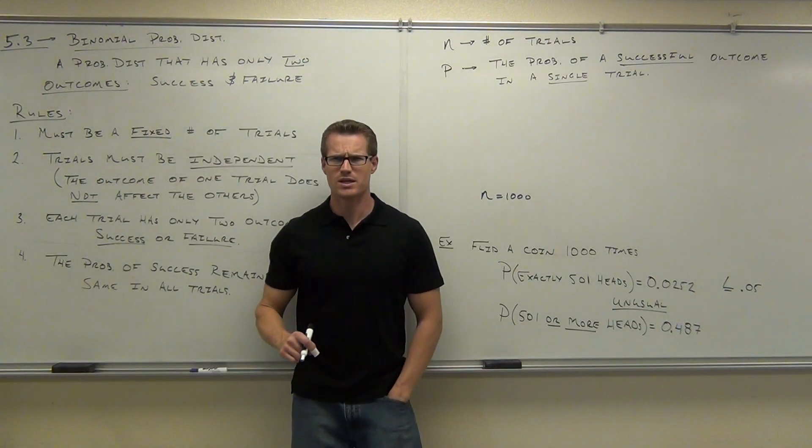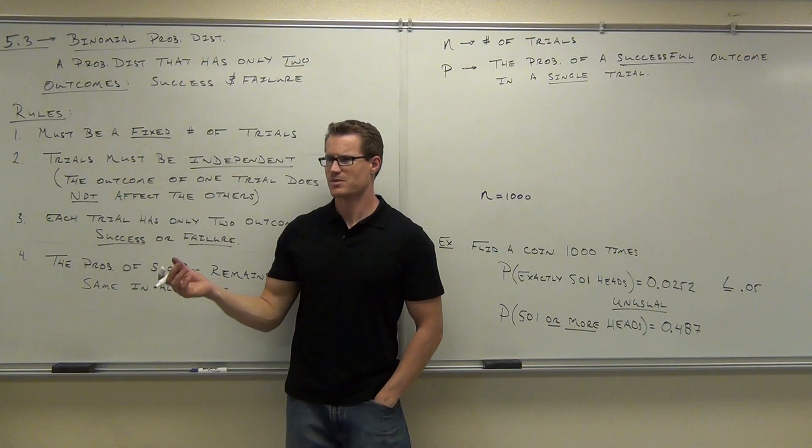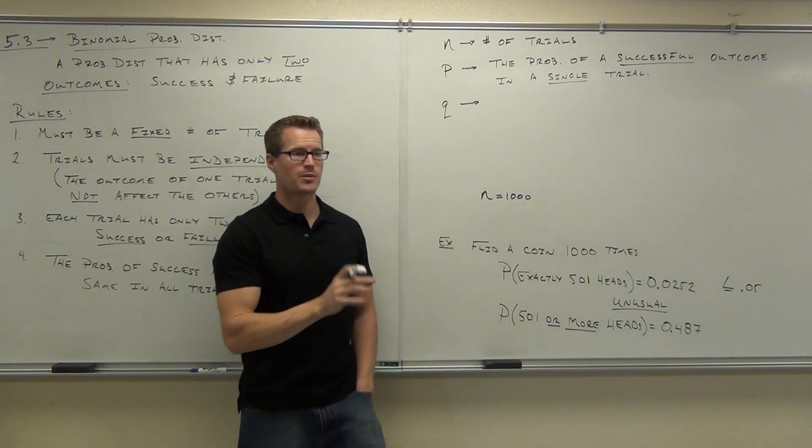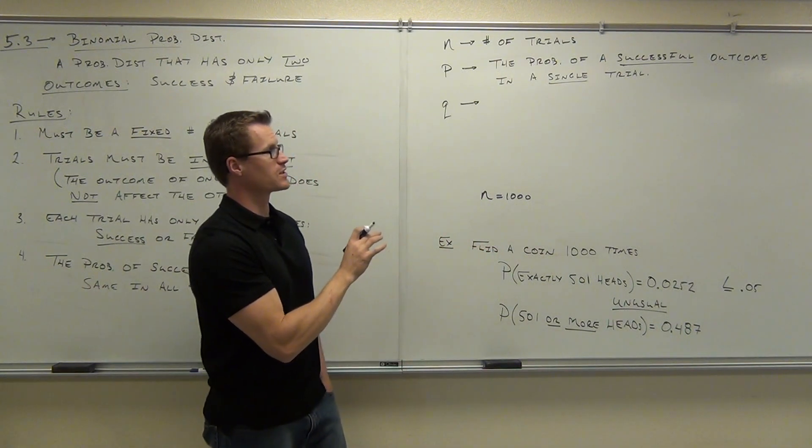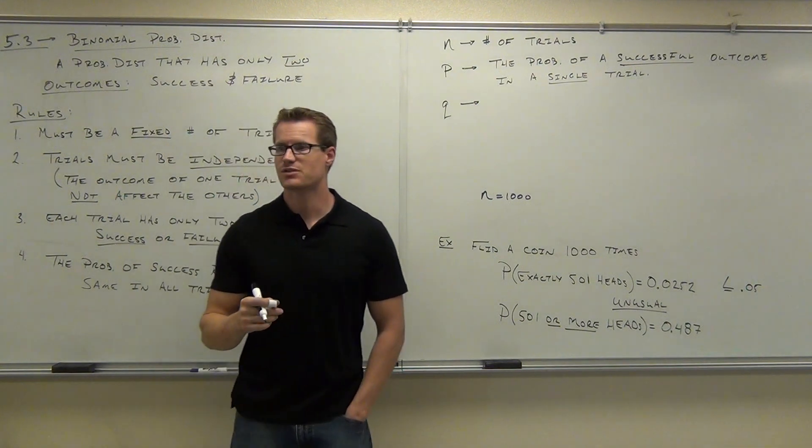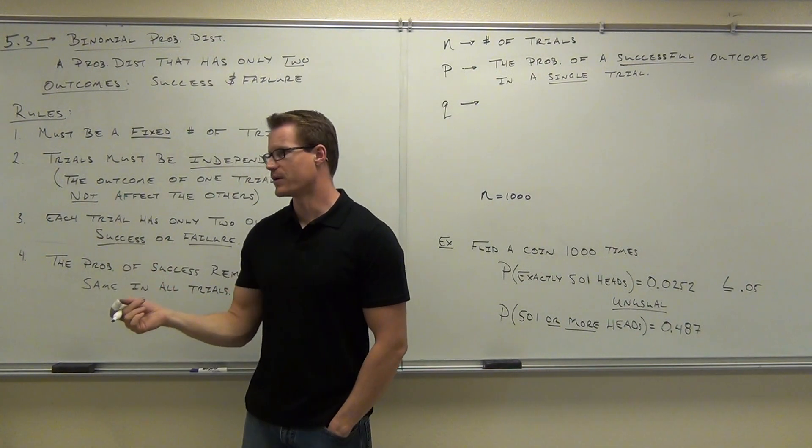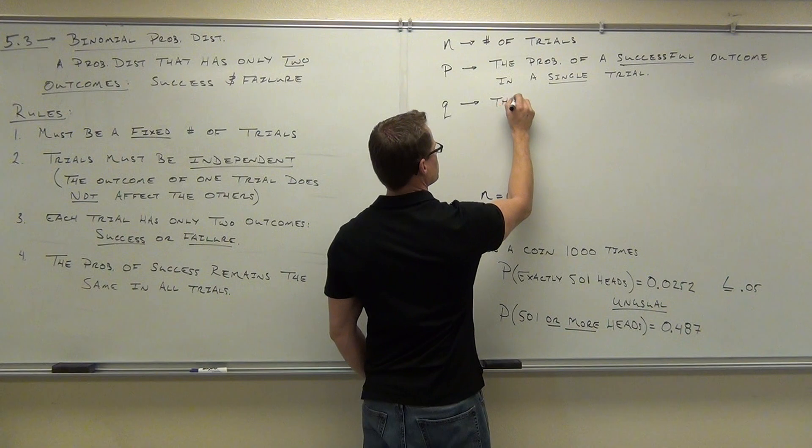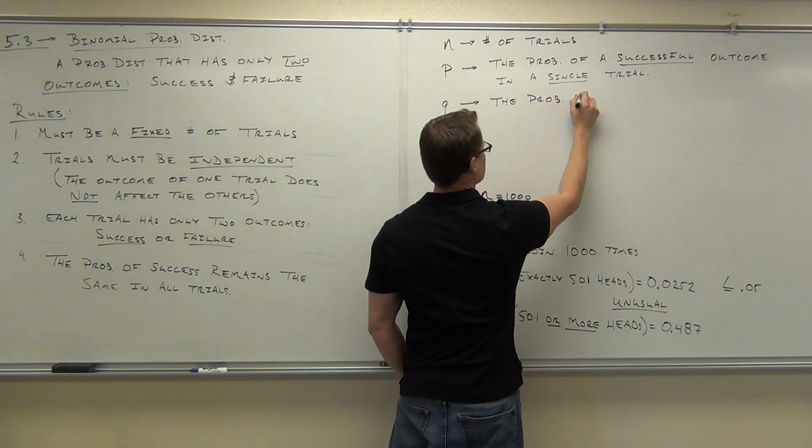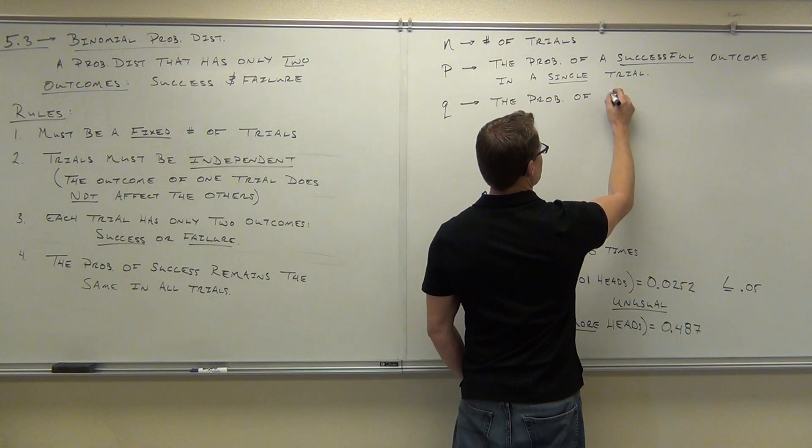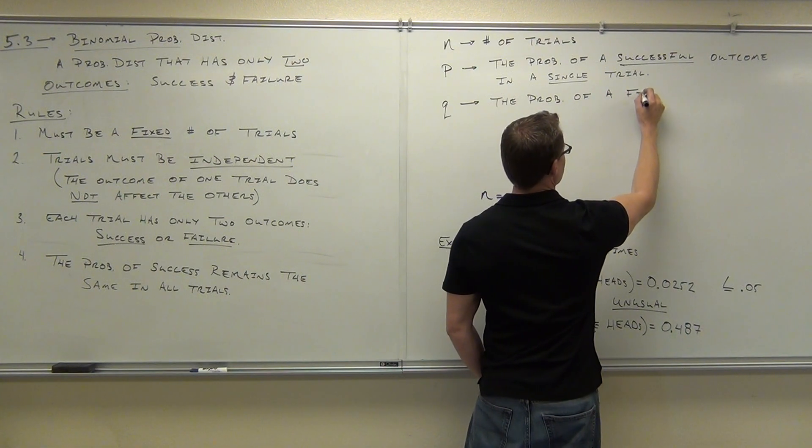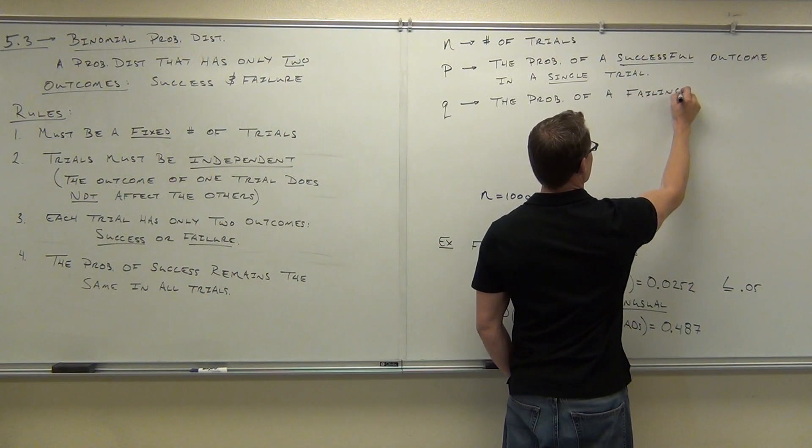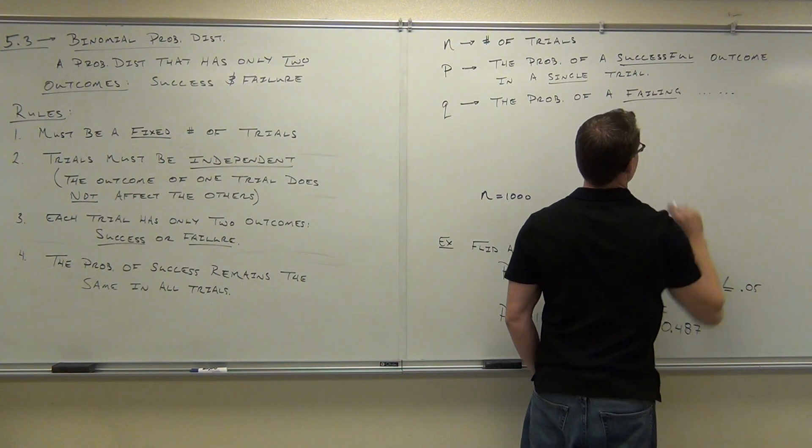Okay, what's the opposite of the letter p? Q. Obviously, it's written backwards, right? If little p stands for the probability of a successful trial, the probability of a successful outcome in a single trial, the probability of Q stands for what do you think? The probability of failure. For sure. Failure. This is the probability of a failing outcome in a single trial.